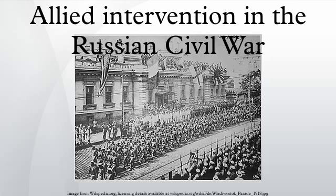The February Revolution changed the course of the war. Under intense political pressure, the Tsar abdicated and the Russian Provisional Government was formed, led initially by Georgi Lvov and later by Alexander Kerensky.